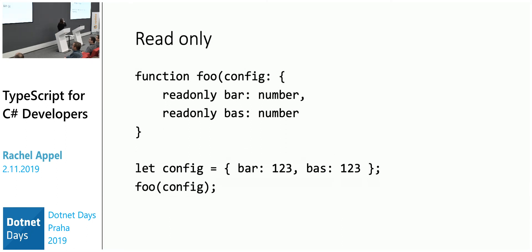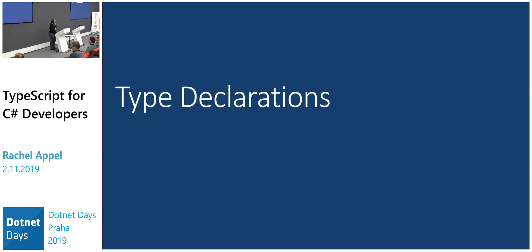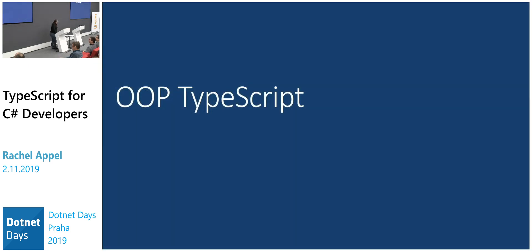You can set properties to be read-only using the readonly keyword, or if you're creating a class just use a getter without a setter, which is what you do in C#. There are also generics — a little more outside the scope of an hour talk, but they're available to use.